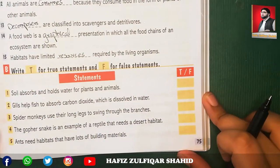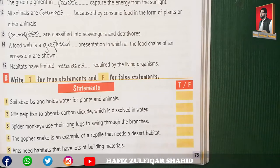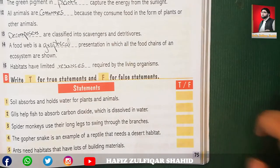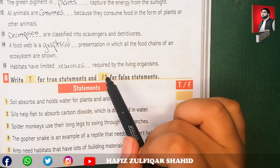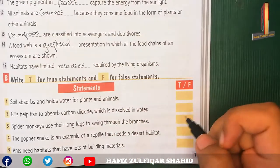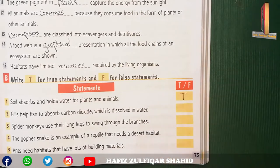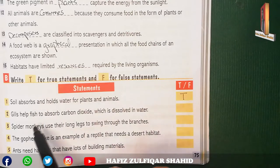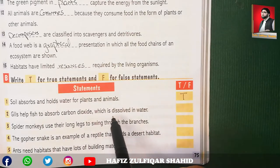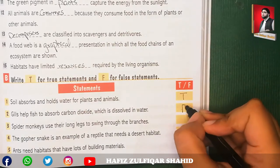Now part B: write T for true statements and F for false statements. Number one: soil absorbs and holds water for plants and animals — yes, this is true. Number two: gills help fish to absorb carbon dioxide dissolved in water — this is false, because gills absorb oxygen, not carbon dioxide.